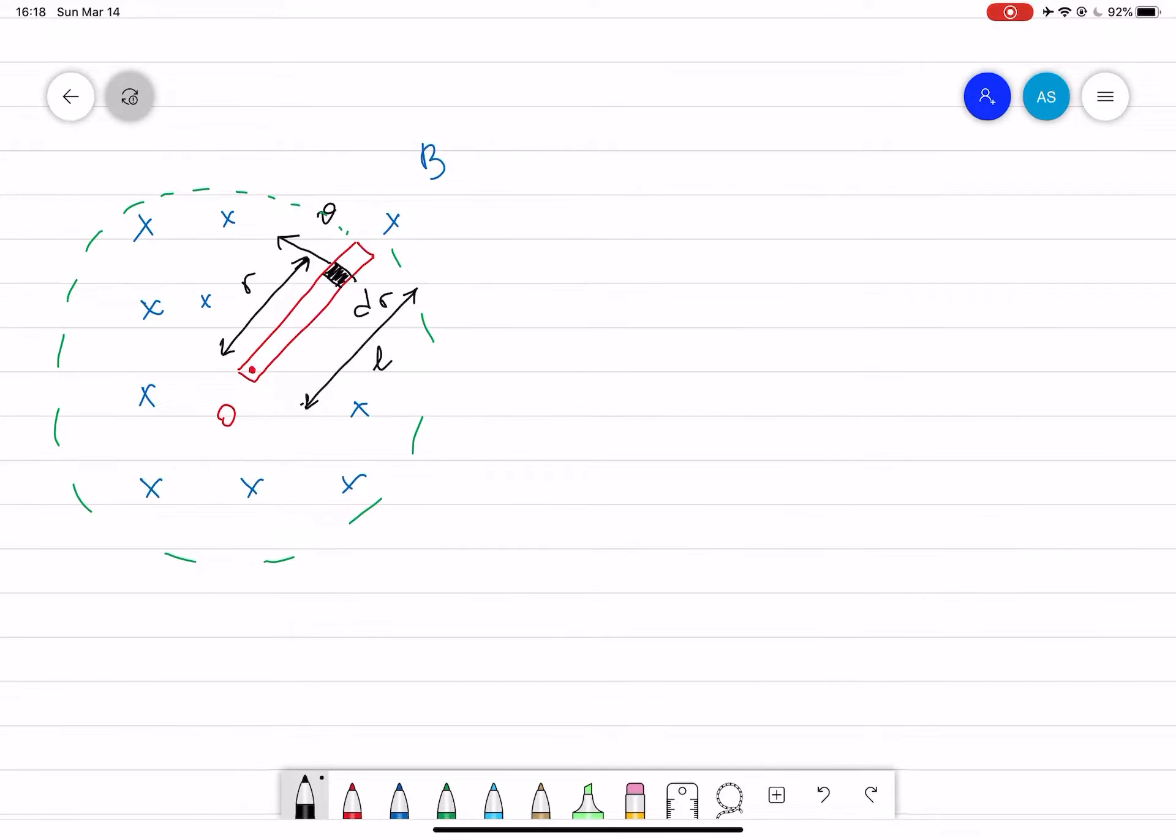Here we have a 1.1 meter long rod rotating about an axis through one end and perpendicular to the rod, with angular speed of 3.8 revolutions per second. So omega is given here.